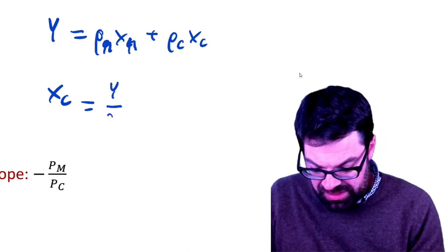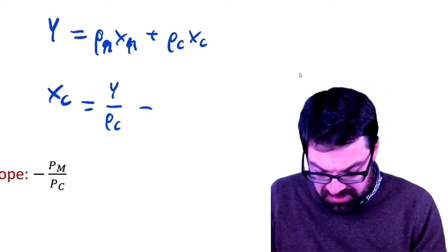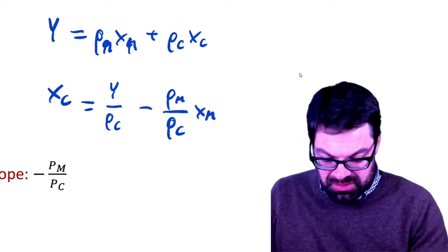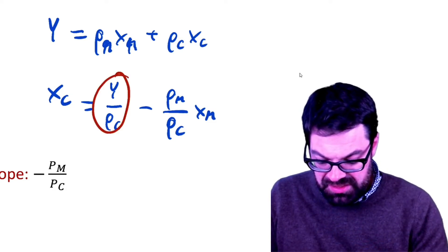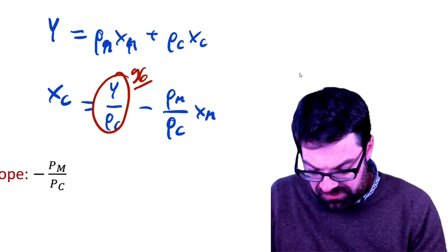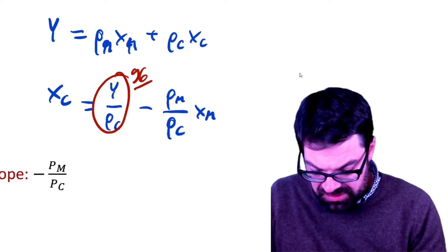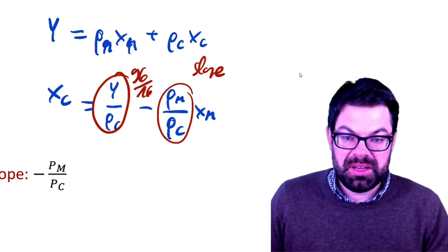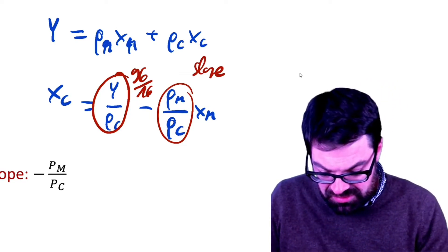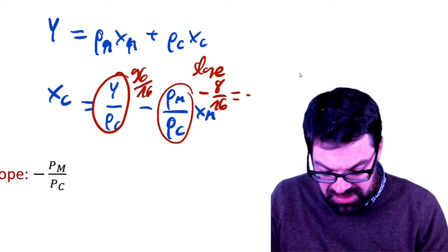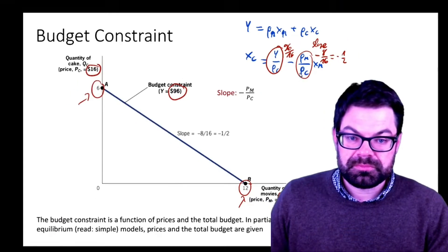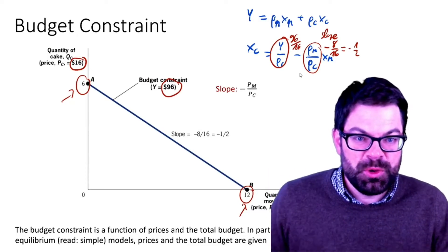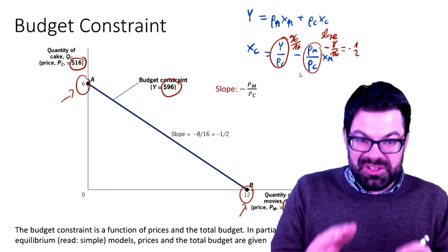We would divide by pc, so xc equals Y divided by pc minus pm over pc times xm. As such we have the intercept which is 96 divided by 16, and we have the slope which is minus 8 divided by 16, so that's minus one half. These are the mechanics of the budget constraint.